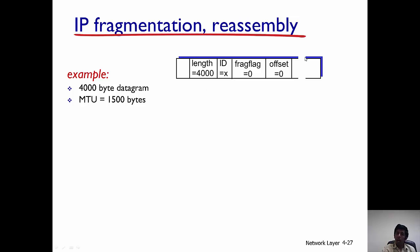Let's look at this IP fragmentation and assembly. This is an IP datagram. The length is 4000 bytes, and let's say the ID is X. That basically tells what is the ID of this IP datagram. Initially, the fragment flag and the offset are both set to zero.